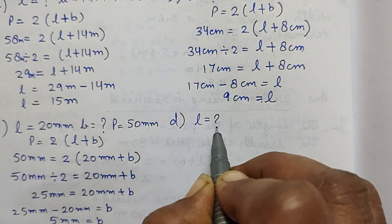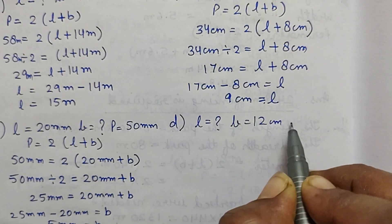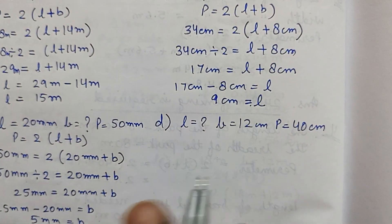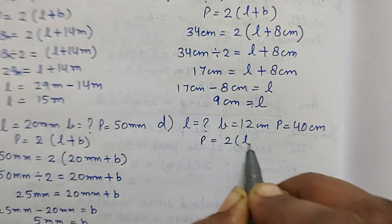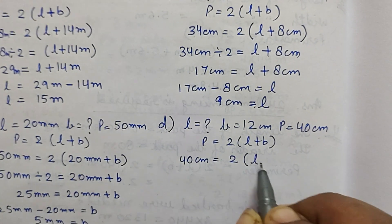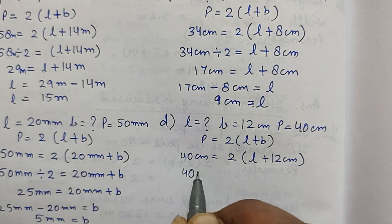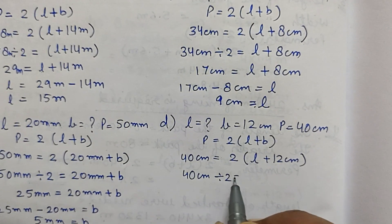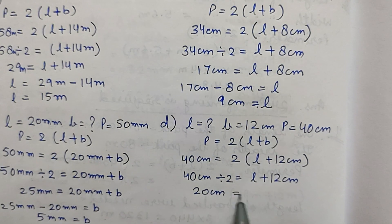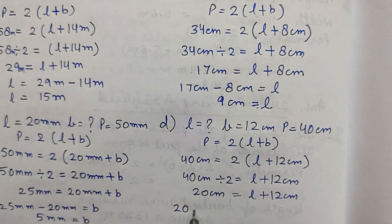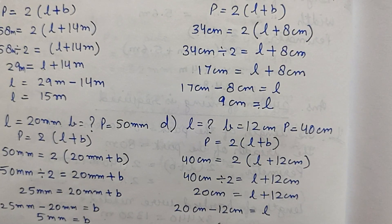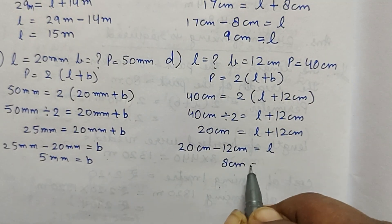Part D: length is not given, breadth is 12 centimeters, and perimeter is 40 centimeters. Using perimeter equals 2(l + b): 40 = 2(l + 12). Dividing by 2: 20 = l + 12. Therefore length equals 20 minus 12, which is 8 centimeters.